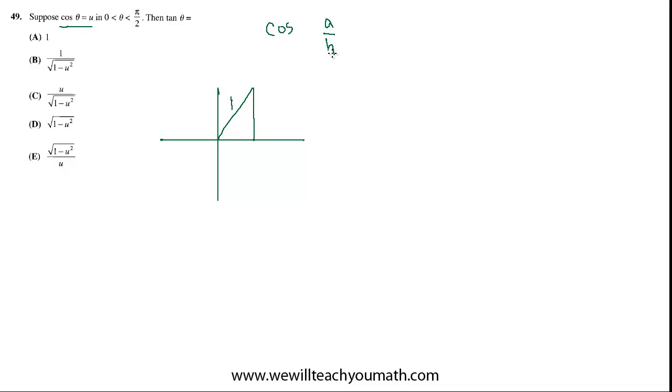And the cos is adjacent over the hypotenuse. So, if the hypotenuse is 1, let's be complete here. cos theta equals a over h. So, if the hypotenuse is 1, then this just becomes a. Oh, by a, I mean adjacent. In our case, cos theta equals u. So, u equals a.